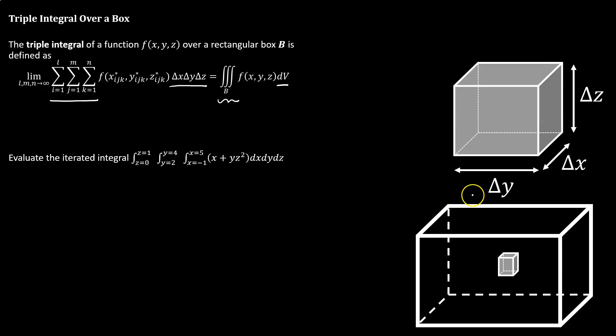Evaluating these integrals is pretty straightforward. We work our way out, starting from the inside. First we'll integrate with respect to x, because that's the innermost integral. Integrating x plus yz squared with respect to x, that would become x squared over 2 plus yz squared times x, and we'll evaluate that between x equals negative 1 and x equals 5.